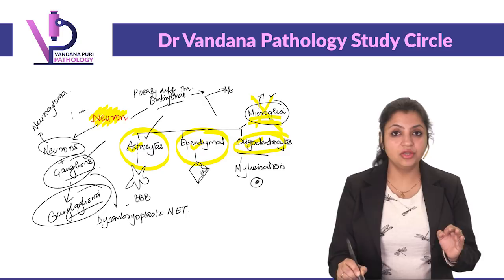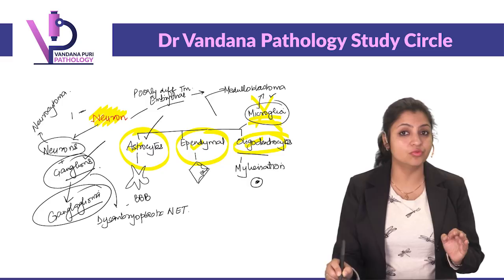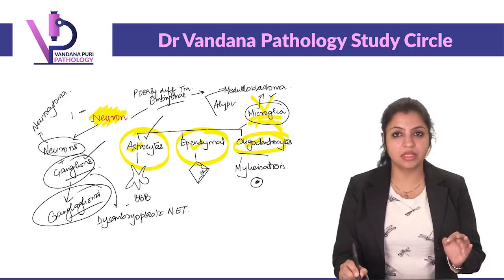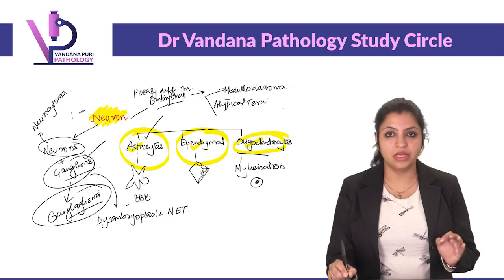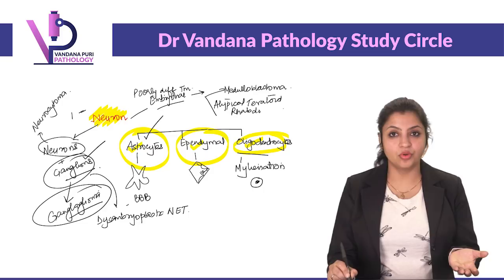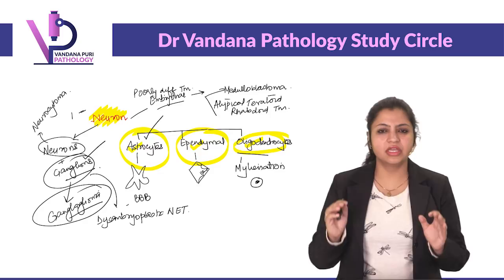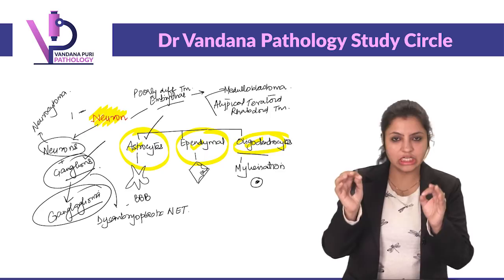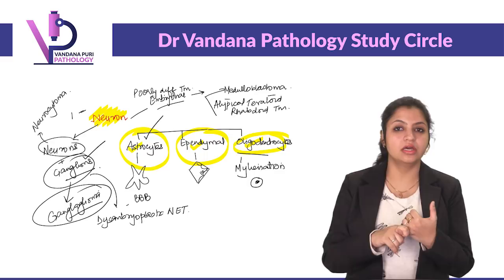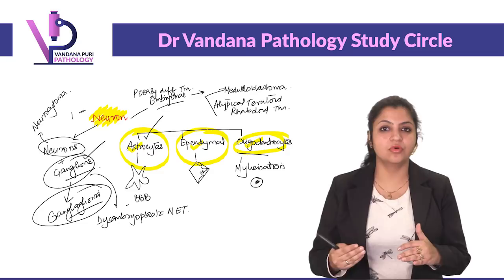There are two poorly differentiated tumors to remember: first, medulloblastoma, and second, atypical teratoid rhabdoid tumor. There are newer categories added in WHO 2016 but they are beyond the scope of undergraduates. For now, remember medulloblastoma and atypical teratoid rhabdoid tumor as the embryonal tumors.